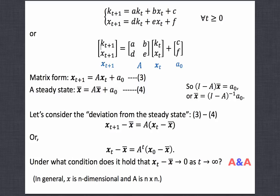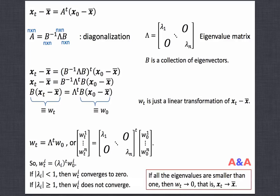We started with a two-dimensional example, but in general there can be 5 or 10 variables. If there are 10 variables, then A is a 10-by-10 matrix and A0 is a 10-dimensional vector. From now on, we consider a general case: bold x is an n-dimensional state vector and capital A is an n-by-n coefficient matrix. We have reached this intuitive expression: the date-t deviation from the steady state is A to the power t times the initial deviation from the steady state.